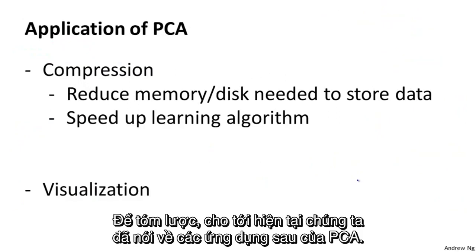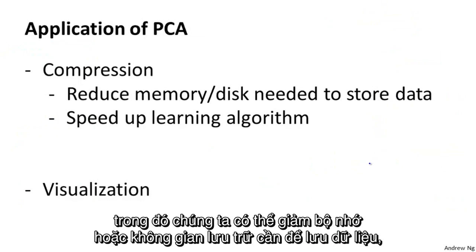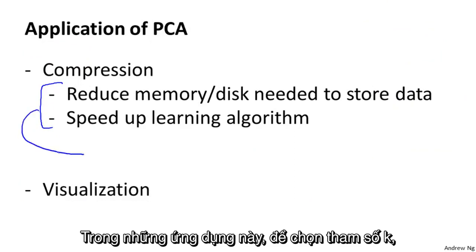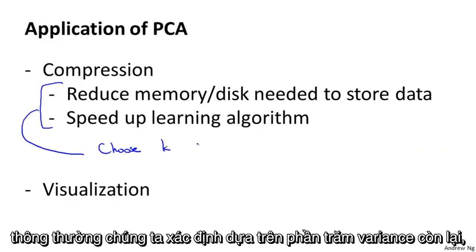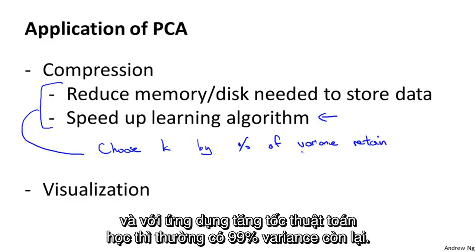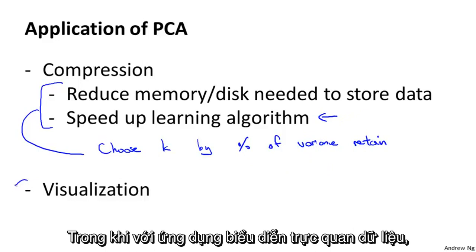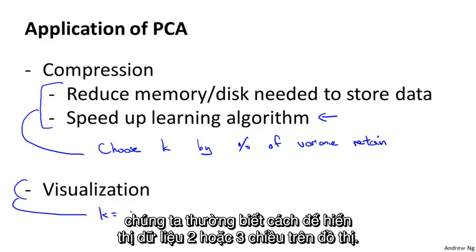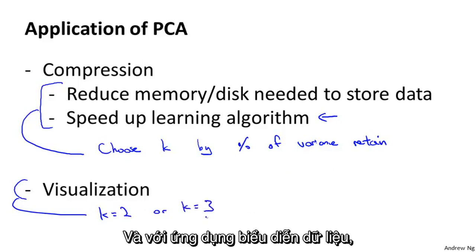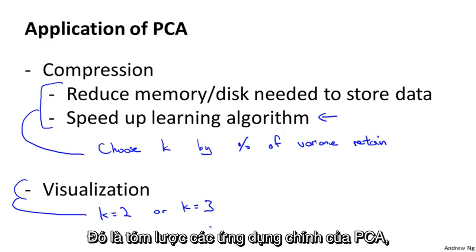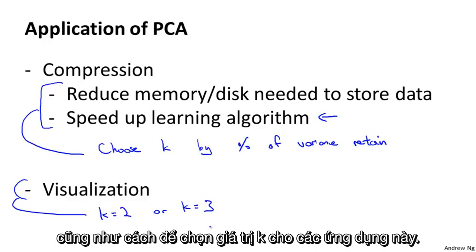To summarize, the main applications of PCA we've discussed are: first, compression — to reduce memory or disk space needed to store data; and second, speeding up a learning algorithm. For choosing K in these applications, we typically determine what percentage of variance is retained — often we'll retain 99% of the variance, which is a very typical choice. For visualization applications, we usually choose K equals 2 or K equals 3, since we can only plot 2D and 3D data sets.